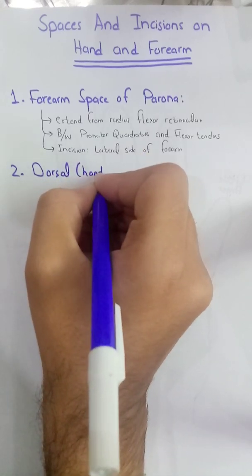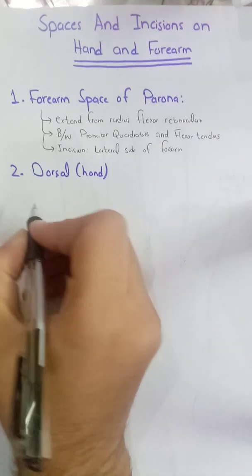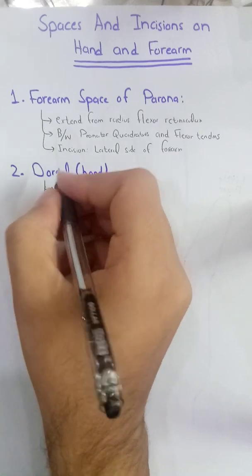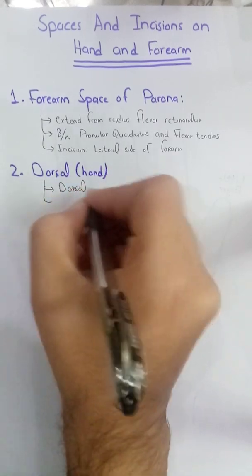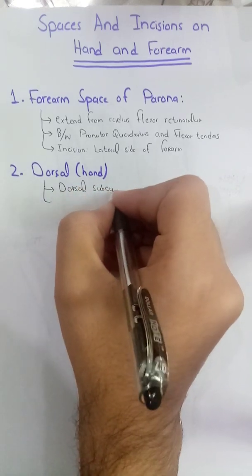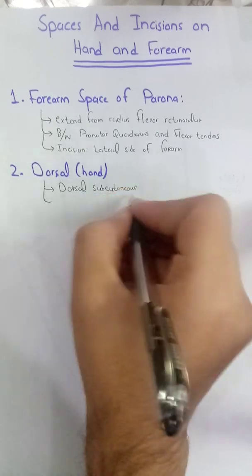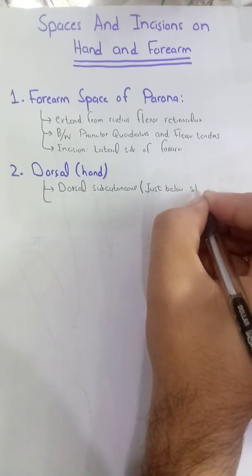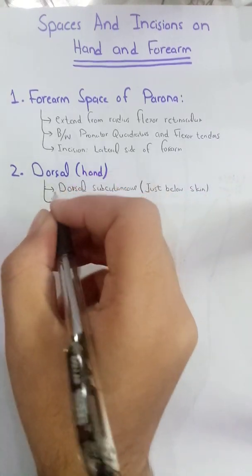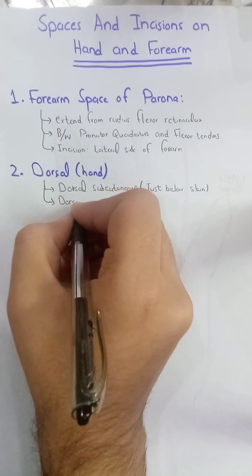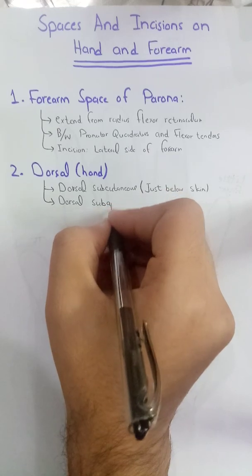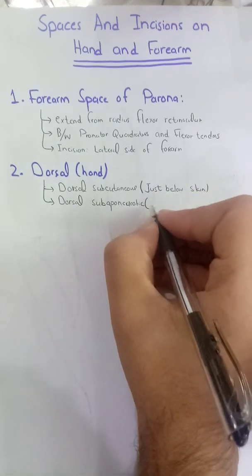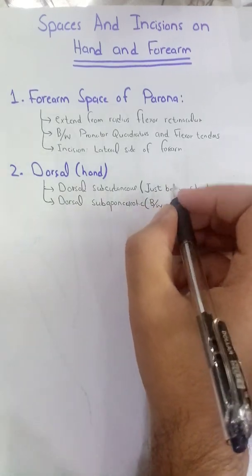On the dorsal side of the hand there are two spaces. The first is the dorsal subcutaneous space, which as its name indicates is just below the skin. The second is the dorsal subaponeurotic space, which lies between the metacarpal bone and the extensor tendons.